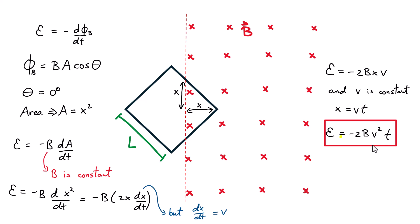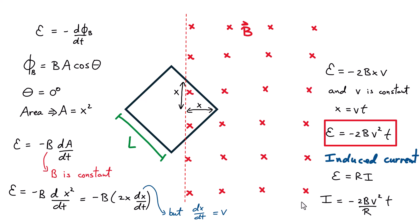Now for the induced current as this first section enters the magnetic field region: we've been given the resistance of the loop, so we simply take that EMF and divide by the resistance R. The induced current is proportional to the EMF and thus proportional to time.